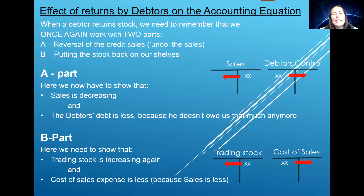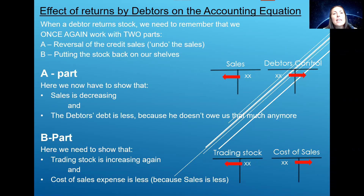What I've done here is on your right-hand side, I actually showed you the original transaction where we sold to the debtor. It just makes a bit more sense if we then work from that to undo the transaction, or at least part thereof — what will happen in the A part and what will happen in the B part.